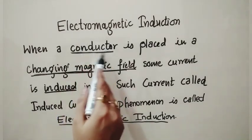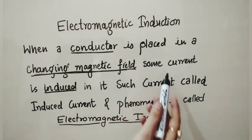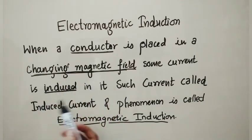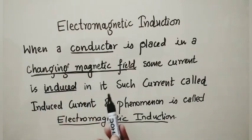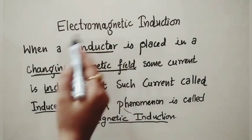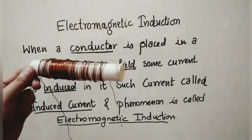In this case, a conductor is placed in a changing magnetic field - important point, a changing magnetic field. Some current is induced, meaning introduced in it, and that current is called the Induced Current. This whole phenomenon is known as Electromagnetic Induction. Now, induced word means introduced.